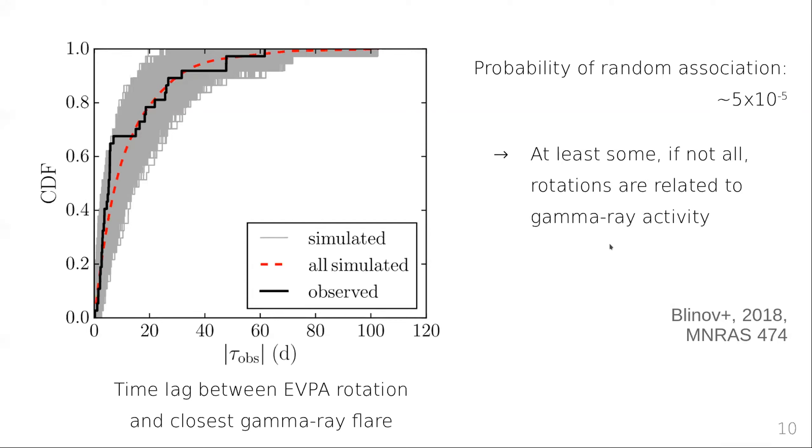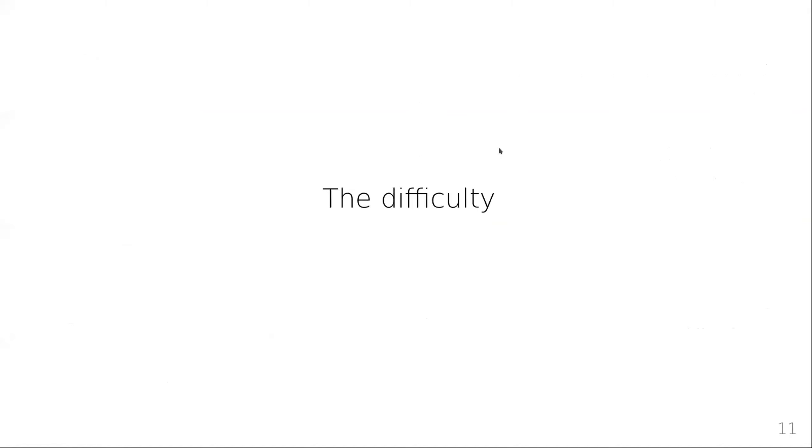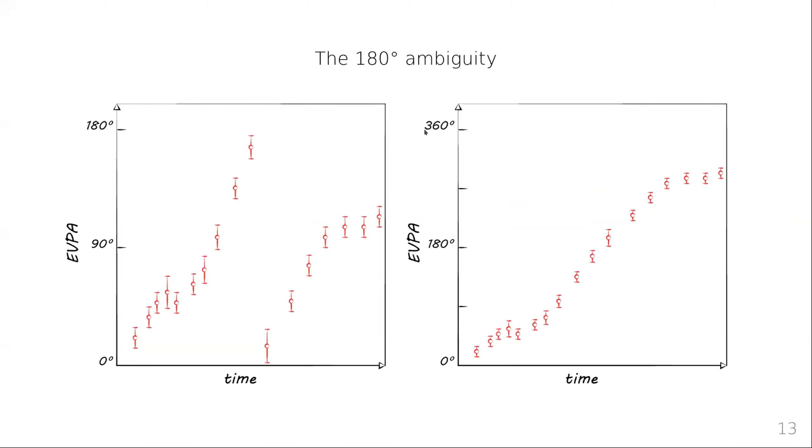Now there's a severe problem in dealing with polarization angle measurements and I want to touch upon that. Let's say I show you two orientations of a line and ask you how much did it rotate? Well, it looks like about 90 degrees, but did it rotate clockwise or counterclockwise, or did it actually turn various times before it ended up here? We cannot tell if we just have two measurements and this is what we call the 180 degrees ambiguity.